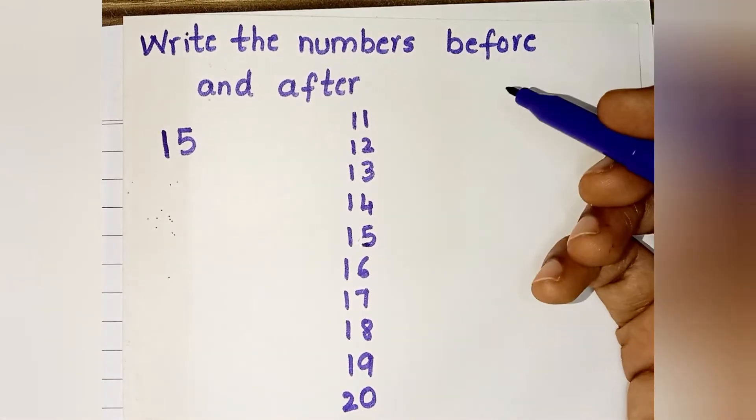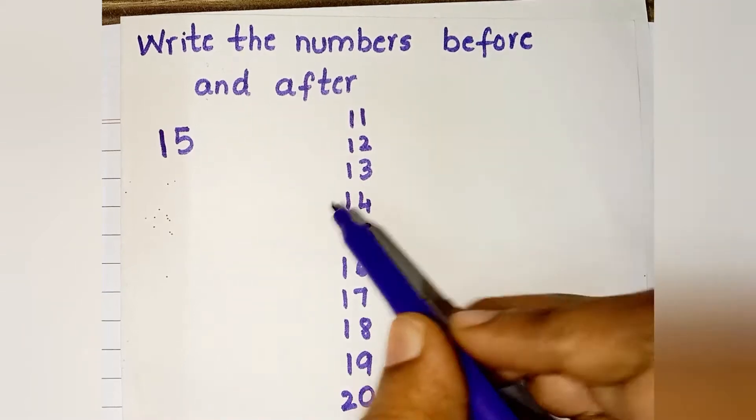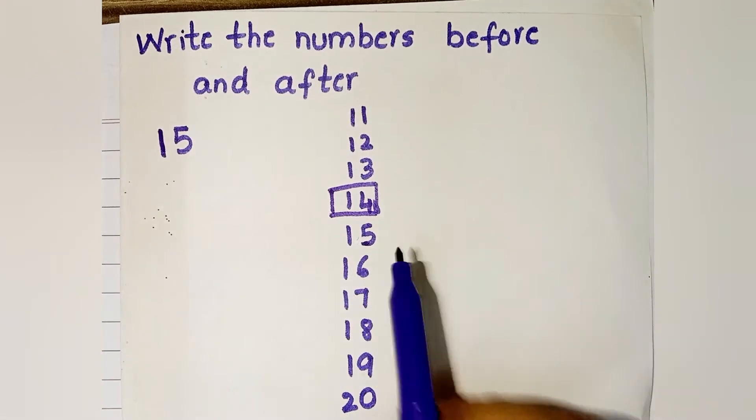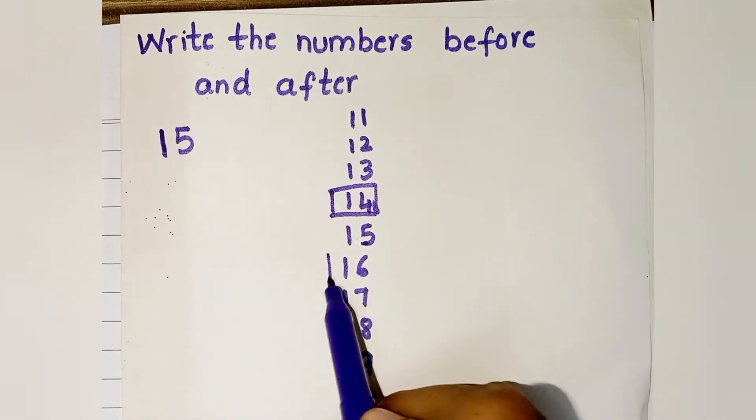what number comes before 15? It is 14. What number comes after 15? It is 16.